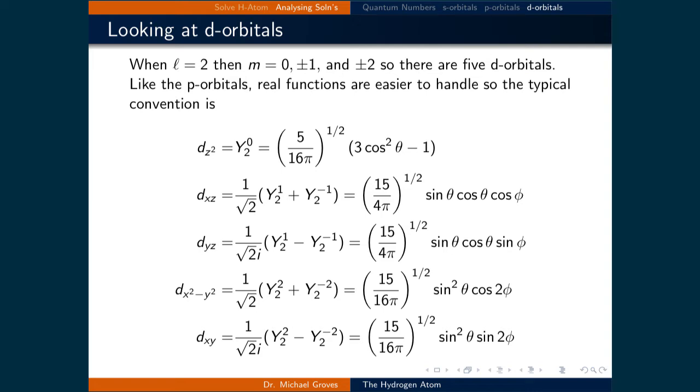Like the p orbitals, we want to use real wave functions to describe these orbitals. Looking exclusively at the angular part of the solution for the hydrogen atom, when m is equal to 0, we already have a real wave function. And since it's oriented along the z-axis, we call this one the dz squared orbital.